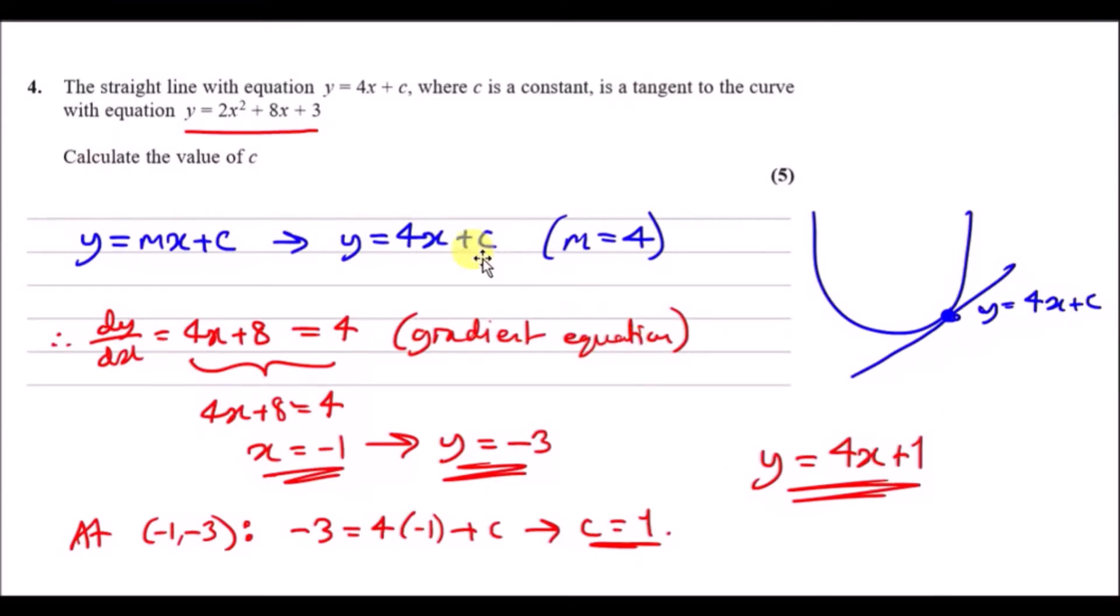So number four, the straight line with equation y equals 4x plus c. Notice here that you have a gradient already with m equals 4, where c is a constant, is a tangent to the curve with equation y equals 2x squared plus 8x plus 3. So here's a quadratic. Now they want to find the value of c.